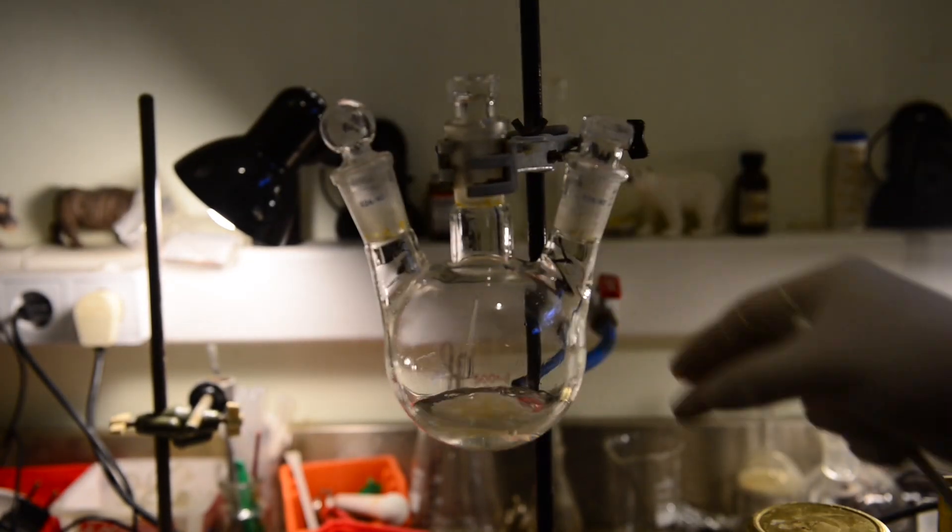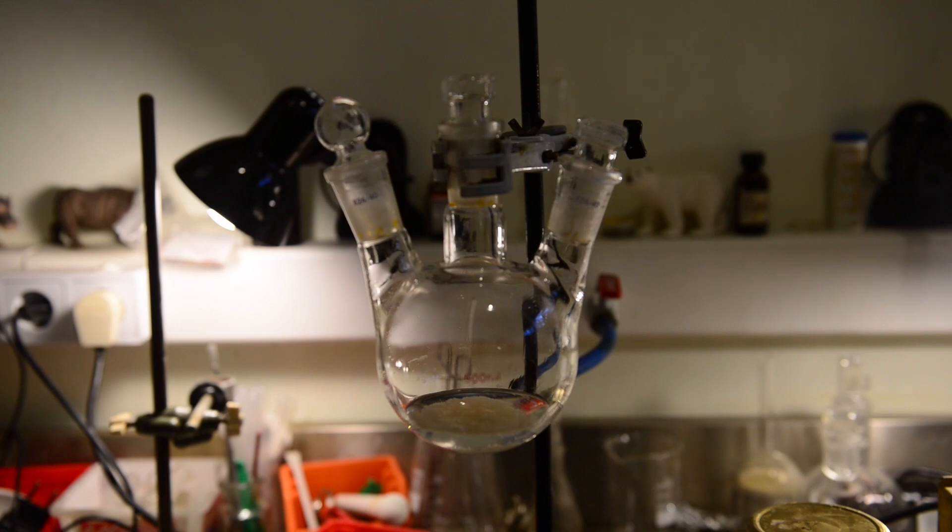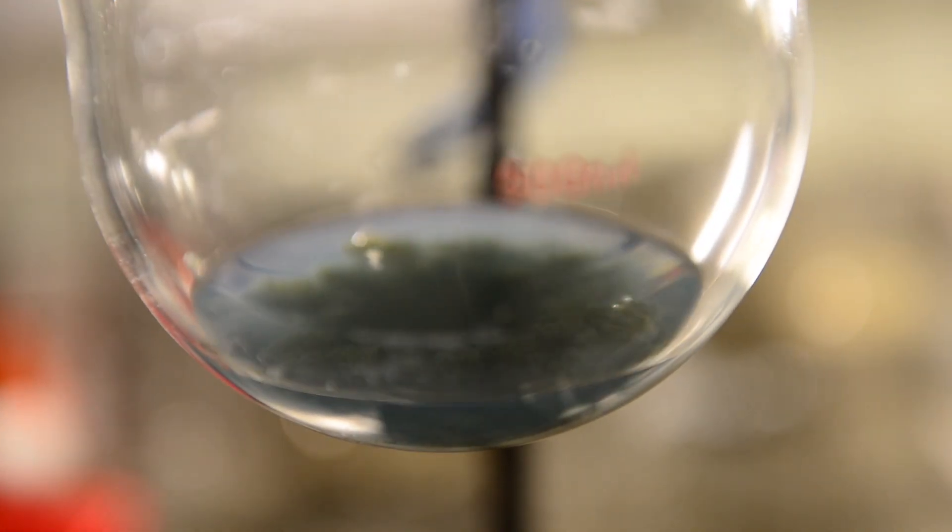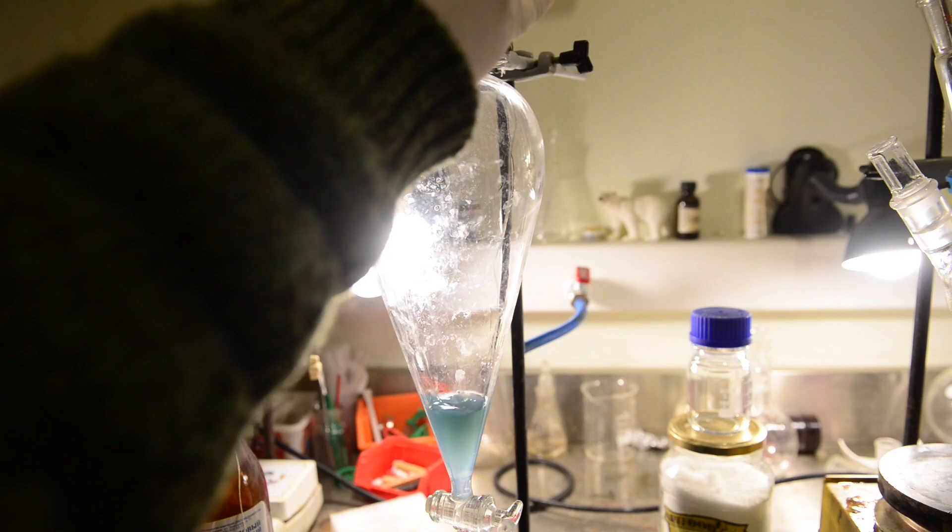At this point, the solids in the flask become chunky and the liquid turns into faint blue coloration. We are decanting the liquid to the separation funnel.